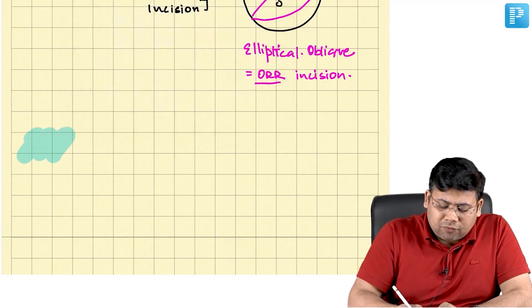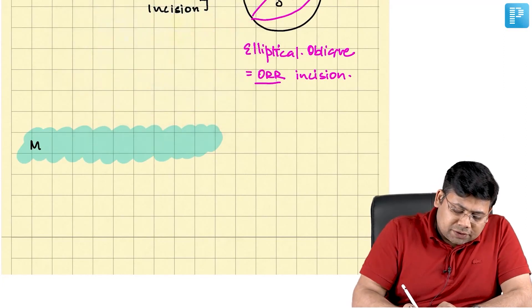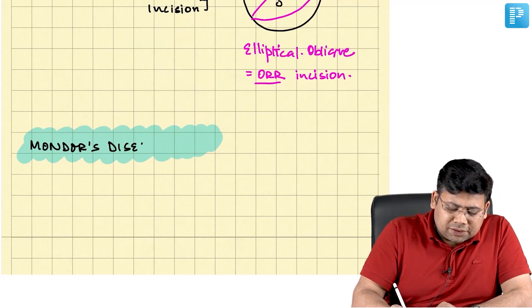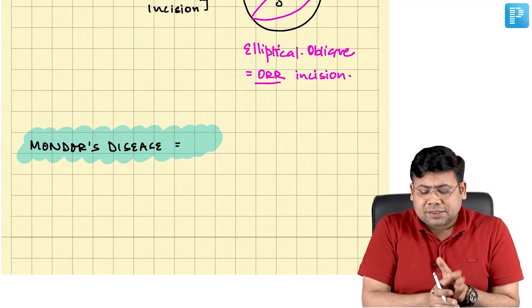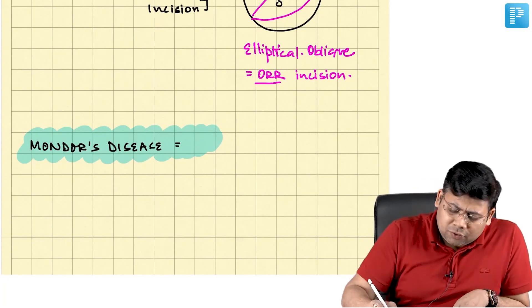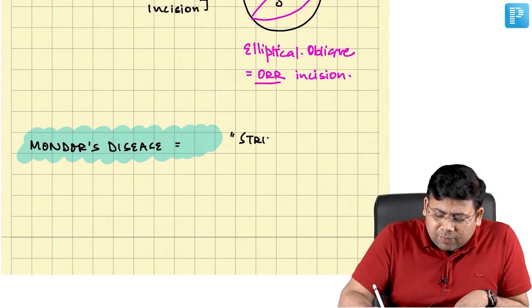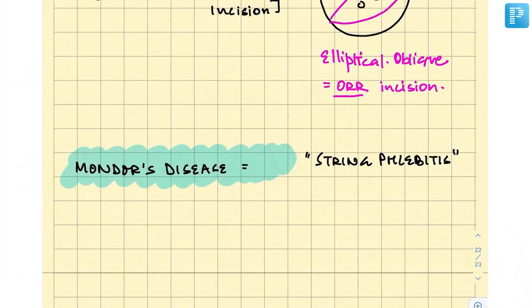Let us see the concept of Mondor's disease. Mondor's disease is equal to superficial thrombophlebitis of the inframammary vessels. This is also known as String Phlebitis.